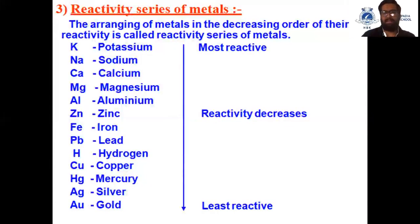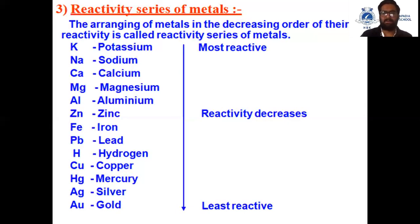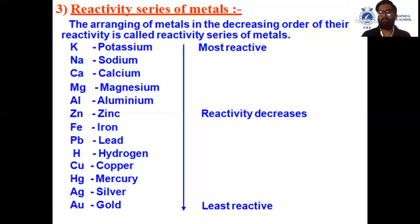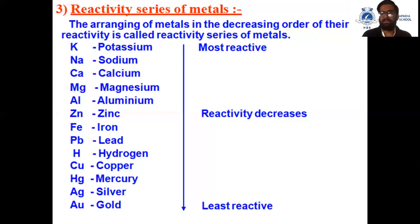Now we will study the reactivity series of metals. Arranging metals in decreasing order of their reactivity is called the reactivity series of metals. Potassium is at the top, meaning it is the most reactive metal, and gold is at the bottom, meaning it is the least reactive metal. Potassium can displace all other metals from their solutions, and gold cannot displace any metal from its solution.